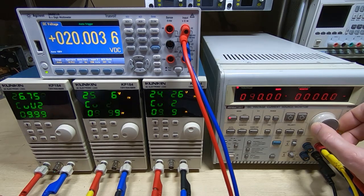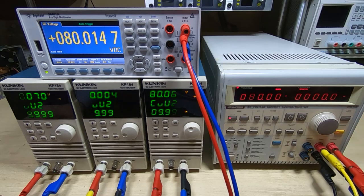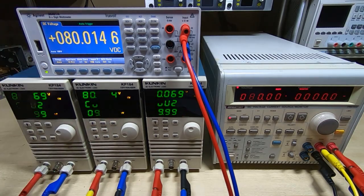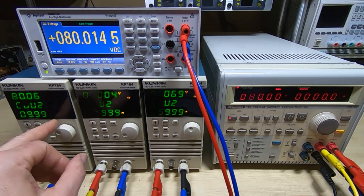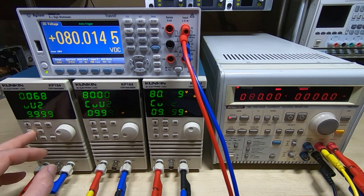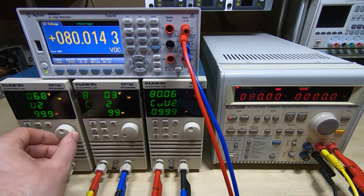So we'll set this to 80. We've now got 80 volts or close to 80 volts showing. Same thing, we set the bottom line of the Kunkin to read our reference value. So we want 79.999.